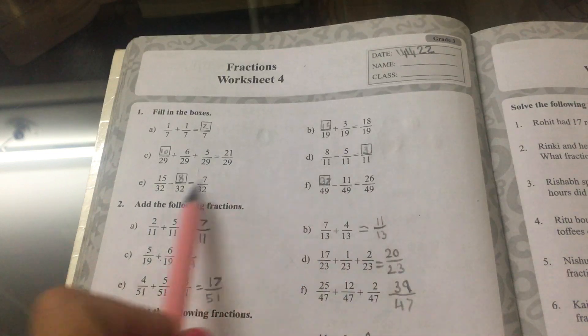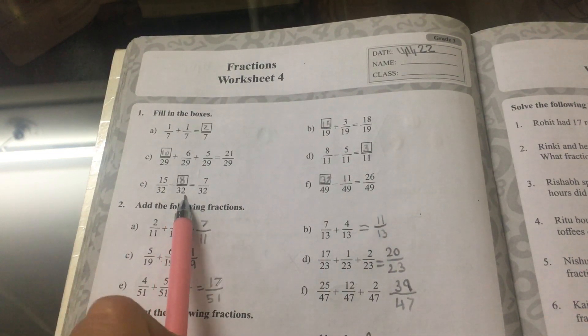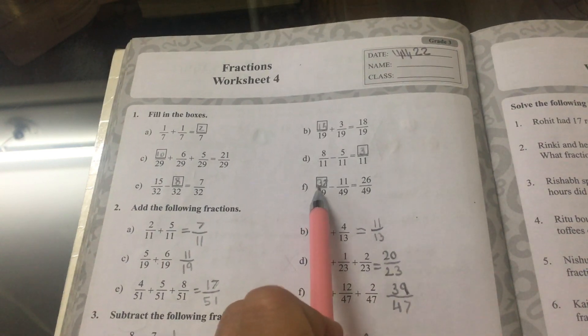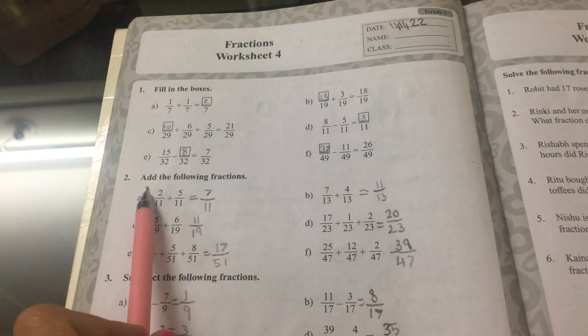D is 3 elevenths. E is 8 thirty-seconds, and F is 37 forty-ninths.